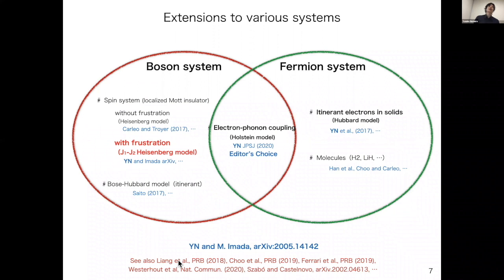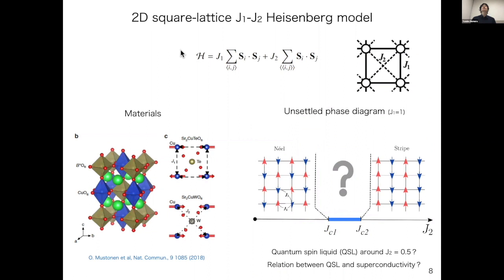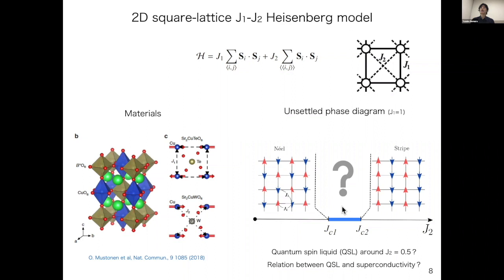Now we turn to the frustrated spin systems. This is the two-dimensional square lattice J1-J2 Heisenberg model. J1 is the nearest-neighbor magnetic interaction and J2 is the next-nearest-neighbor interaction, and both are antiferromagnetic. In the classical J1-J2 model, there is a phase transition between the Néel state and the stripe state at J2 equals 0.5, and in the quantum case, a quantum spin liquid phase might appear around J2 equals 0.5.